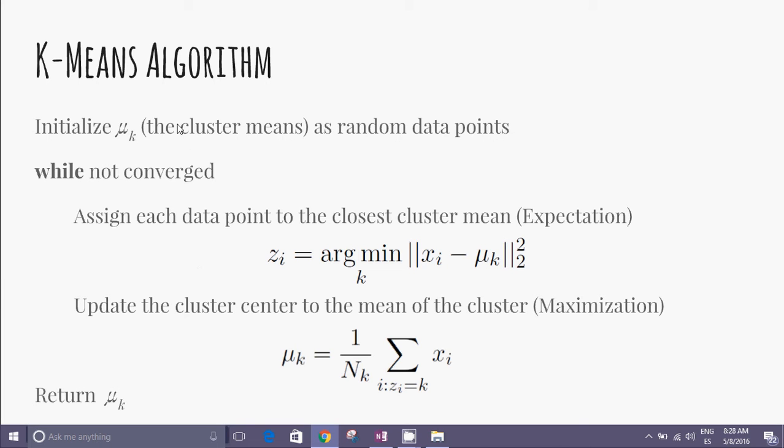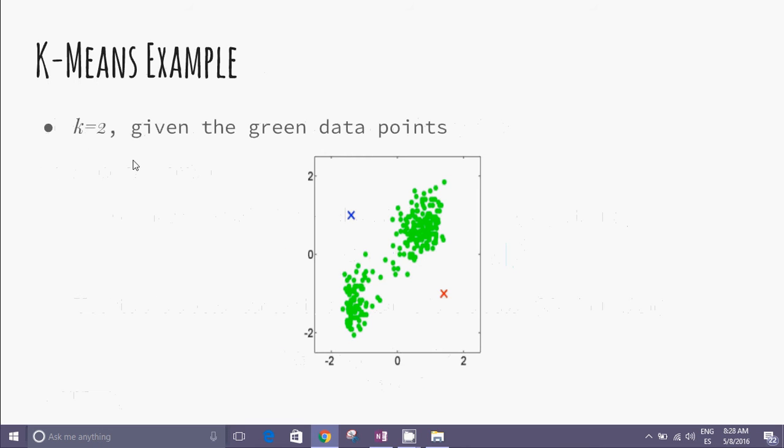This produces an iterative algorithm. For K equal to 2, we have the following: green data points representing all the points in the dataset, and we have two centroids, blue and red.